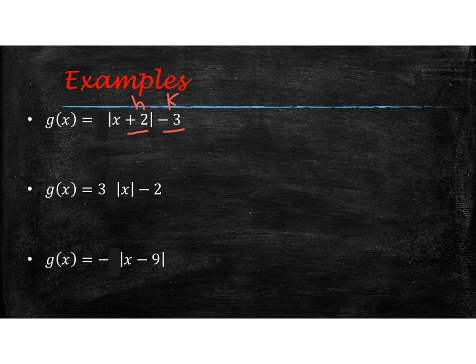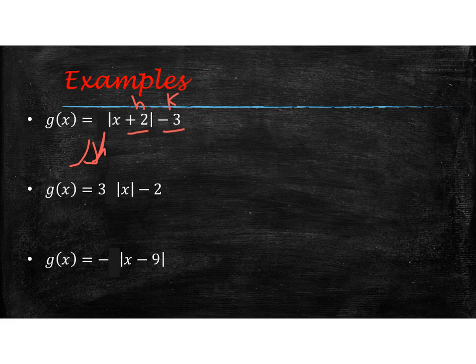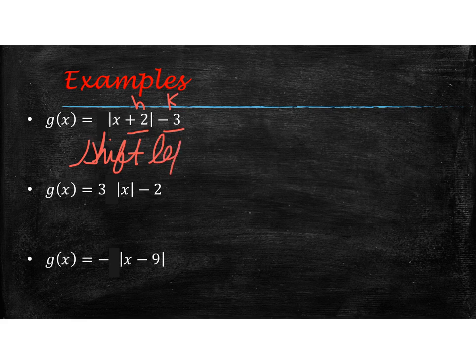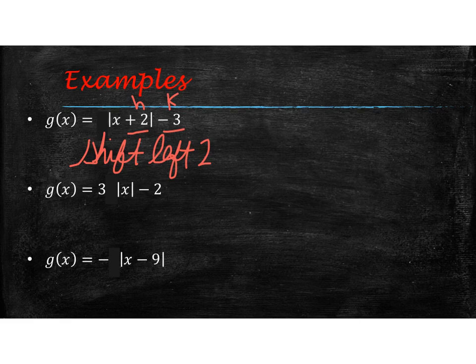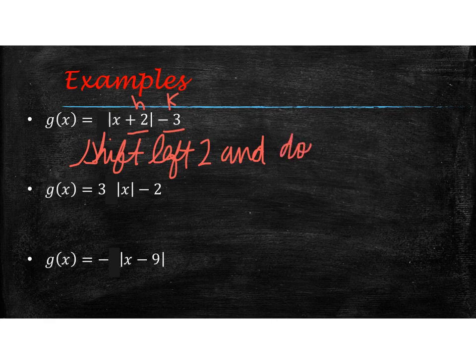Well, the plus 2 is in the position of h, and the minus 3 is in the position of k. And so if you look back at your notes or if you remember what's happening, the h value is going to shift. Because it's positive, it's going to move to the left 2, and then the k makes it move up and down. So we can say because it's negative, it's going to shift down 3.